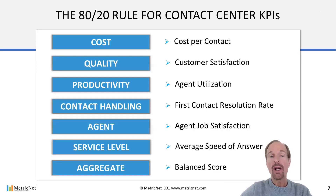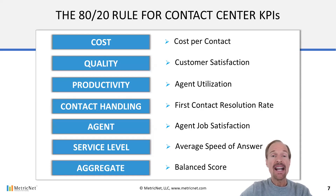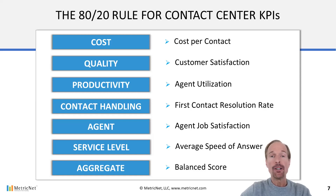Getting back to our 80-20 rule, the next two KPIs on the list are agent job satisfaction and average speed of answer. Agent job satisfaction is important because it has a secondary effect on just about every other metric in the contact center. ASA is important because time — specifically the speed of response — matters to the customer. The final KPI is the balance score, which aggregates the first six KPIs on this page to create a single overall measure of success for your contact center. The next module of this course is dedicated to the balance score.